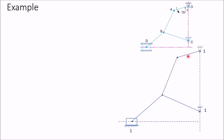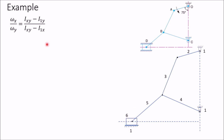The next step is to number these links. There are six links. The fixed link is always marked as number 1. Then mark each link with a separate number arbitrarily: this link is 2, this link is 3, this link is 4, this link is 5, and this slider is 6.